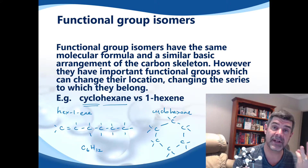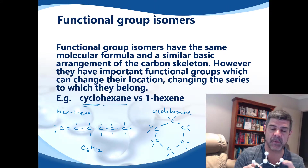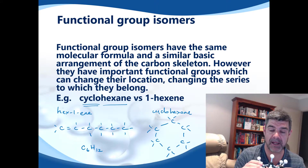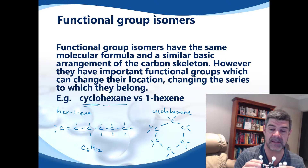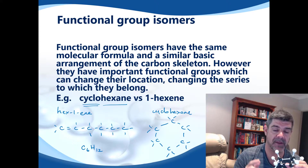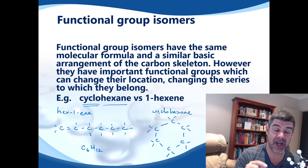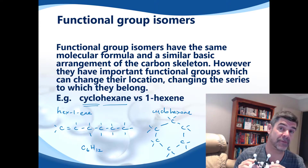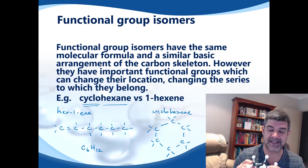You can see that we have three different ways in which we can create isomers: based on either the length of the chain changing, the position of a functional group changing, or the actual functional group itself changing.